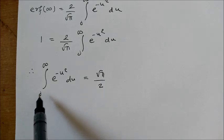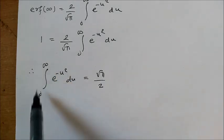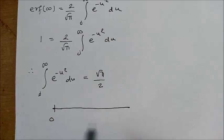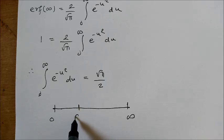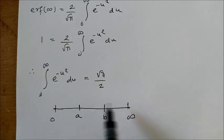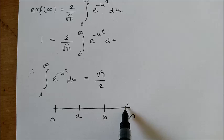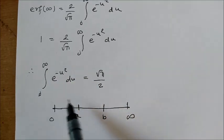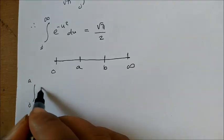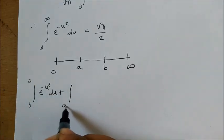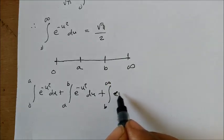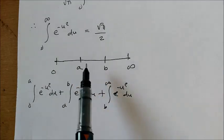Now this integration is over 0 to infinity, so I can divide this interval into different parts. Suppose I take a point a and a point b, where a is less than b. I am dividing the interval into 0 to a, a to b, and b to infinity. Accordingly, the integration also gets divided: integral 0 to a plus integral a to b plus integral b to infinity of e to the power minus u squared du, all equal to root pi by 2.